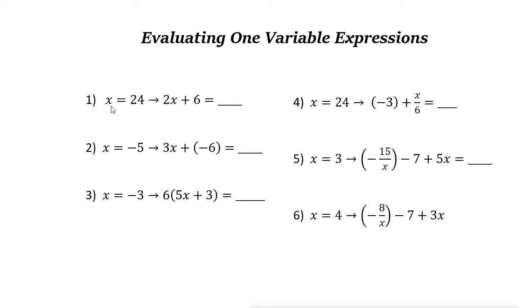Here it says x is 24. So we only have one variable in this expression, 2x plus 6. Now x, we know that it is 24. So we can write 2, then instead of x, substitute 24. Then plus 6. Now 2 times 24 is 48. Plus 6, the answer is 54.